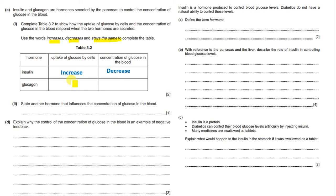Regarding concentration of glucose in the blood: if there is high concentration of glucose in the blood, insulin decreases it. Glucagon decreases the uptake of glucose by cells but increases concentration of glucose in the blood, converting glycogen to glucose for storage.